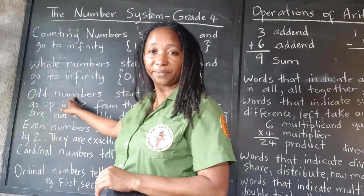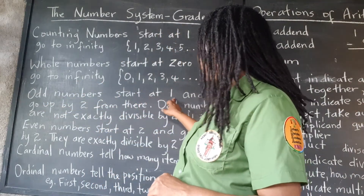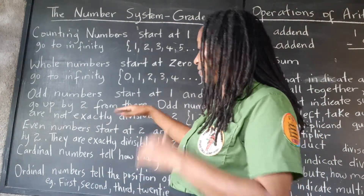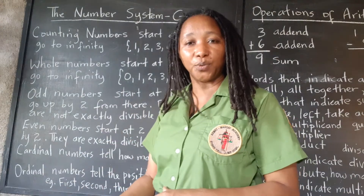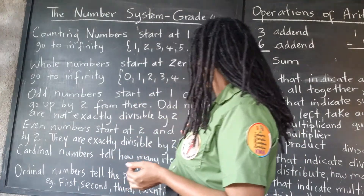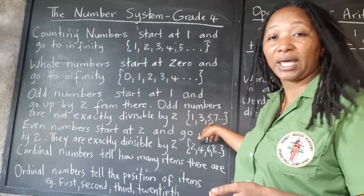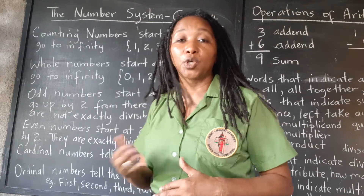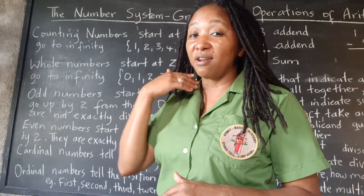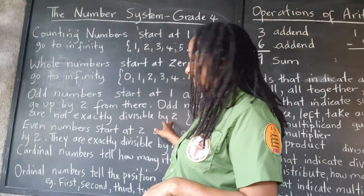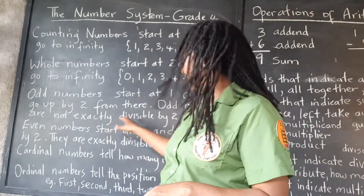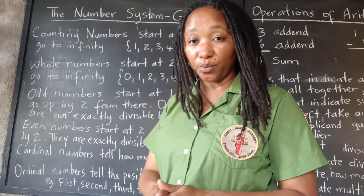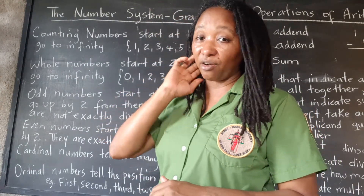Now let's look at odd numbers. Odd numbers start at one and go up by two each time. From one, we add two and get three, add two and get five, add two and get seven. So odd numbers go up by two, but they are not exactly divisible by two. That means if we divide an odd number by two, we are going to get a remainder of one.